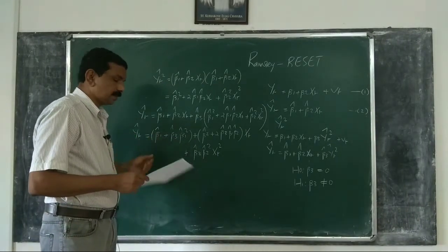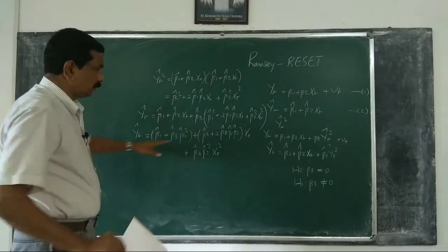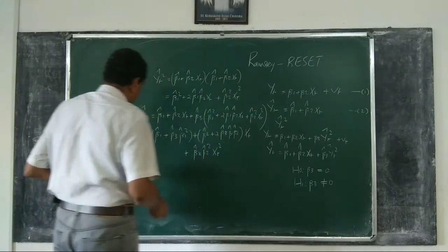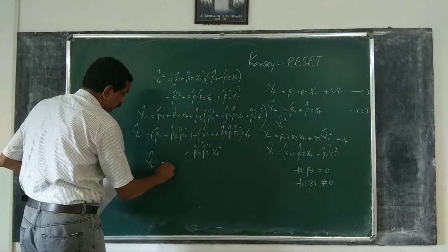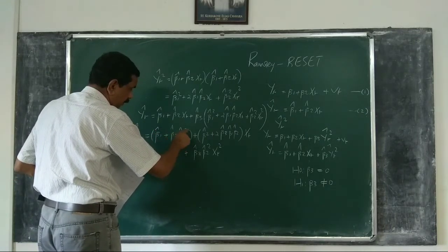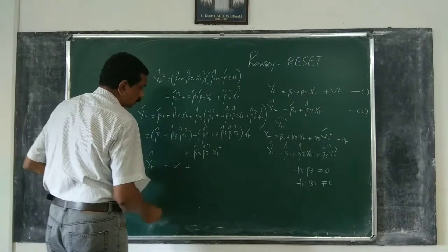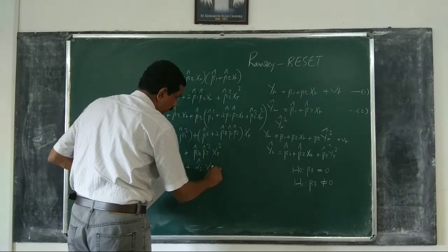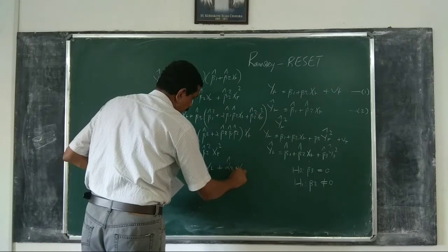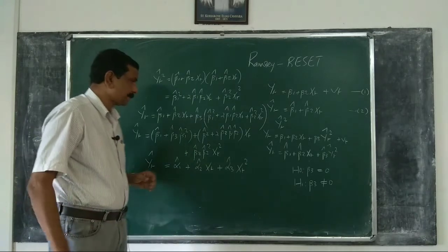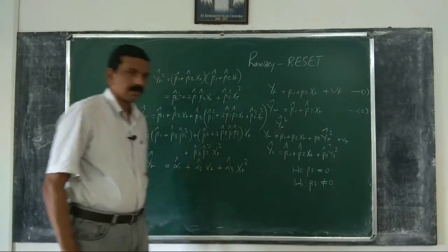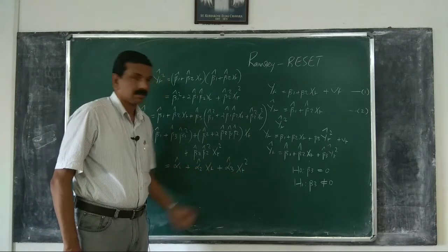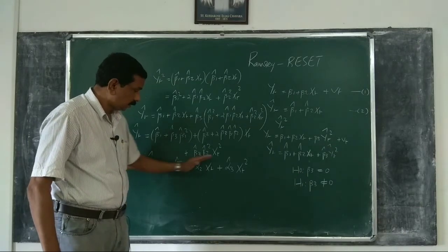As you can see, Ŷt is now a function of Xt and Xt². This can be rearranged as: Ŷt = α̂₁ + α̂₂Xt + α̂₃Xt², where the alpha coefficients absorb the original beta estimates. These models are identical in the sense that we are actually regressing Y on Xt and also Xt².